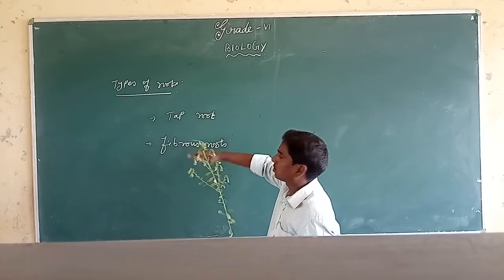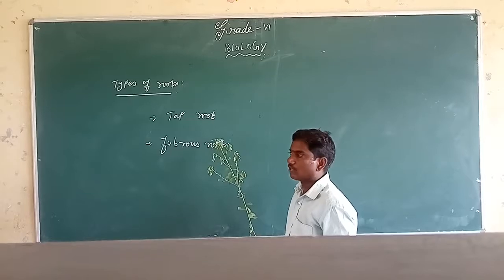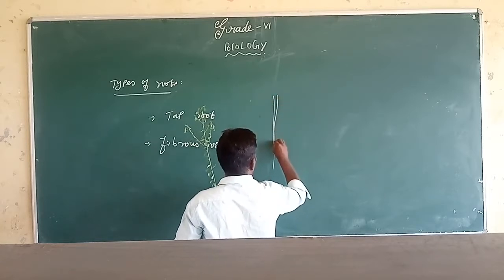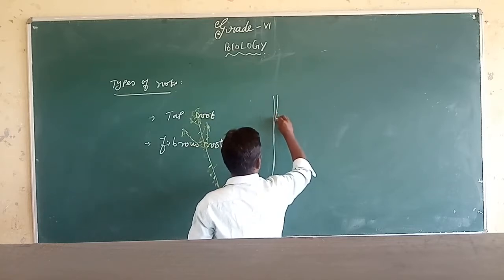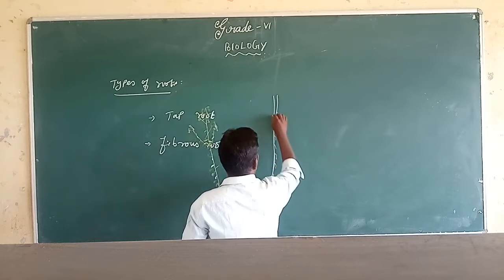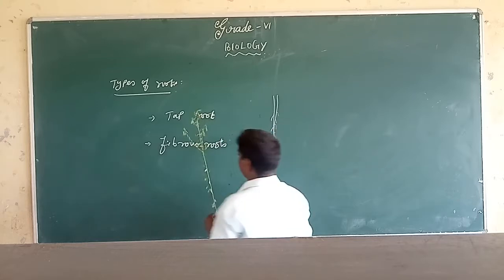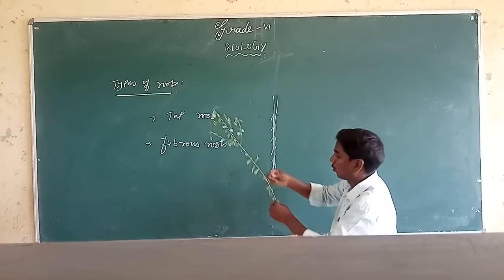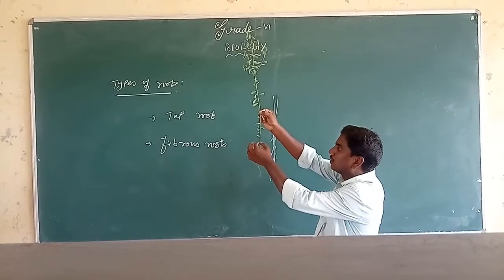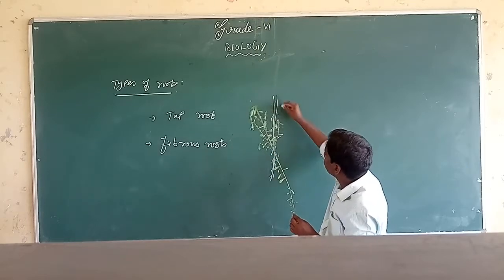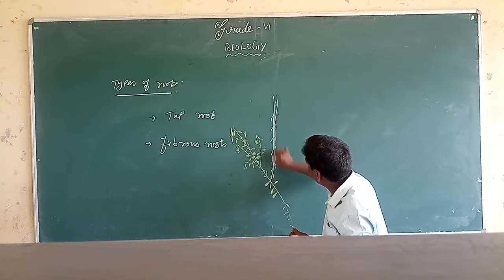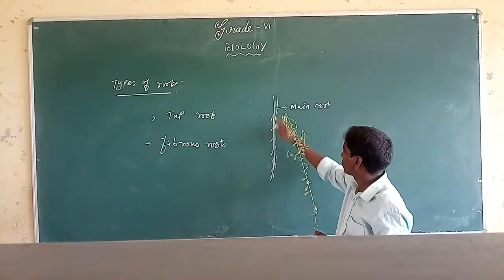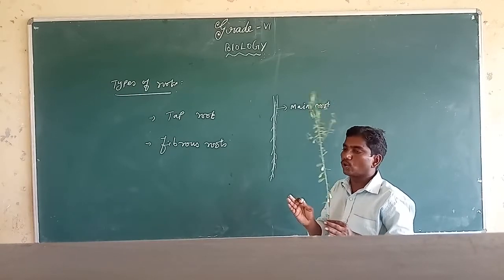There are two kinds of root — one is the tap root and the next one is the fibrous root. The tap root means the main root is known as the tap root. The main root present here is called the tap root.